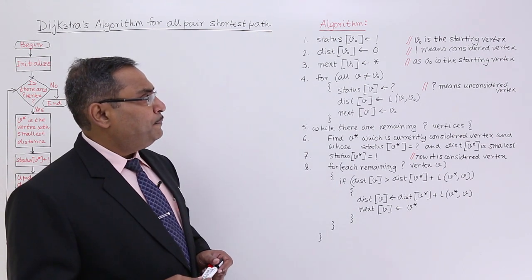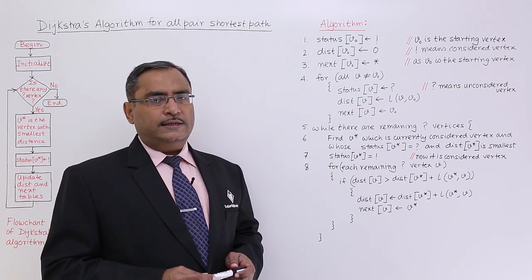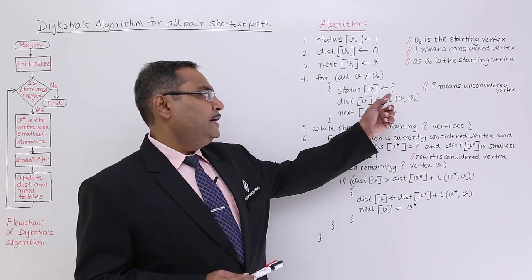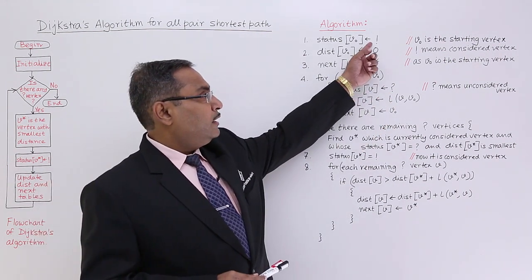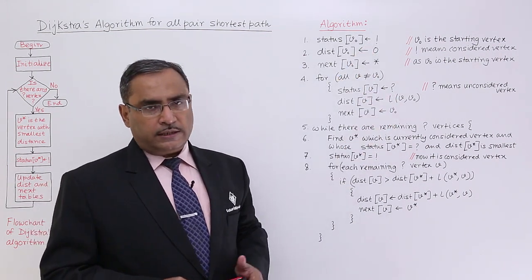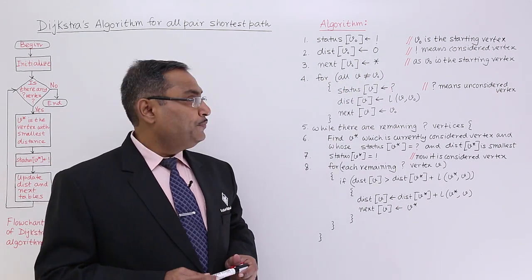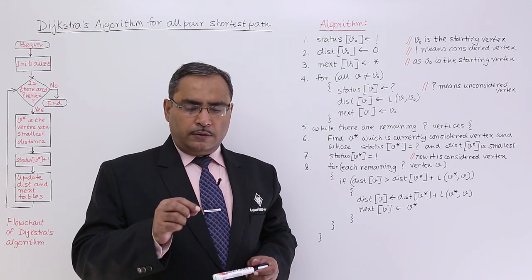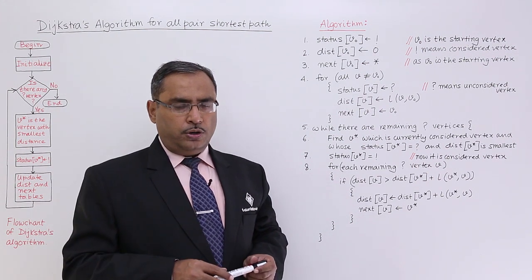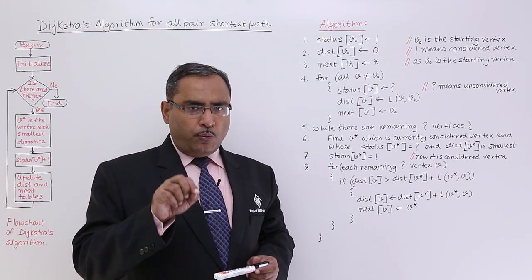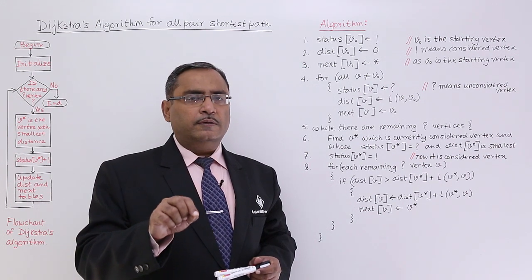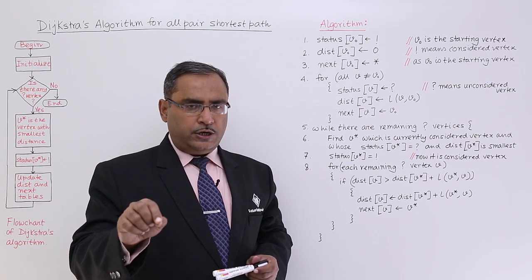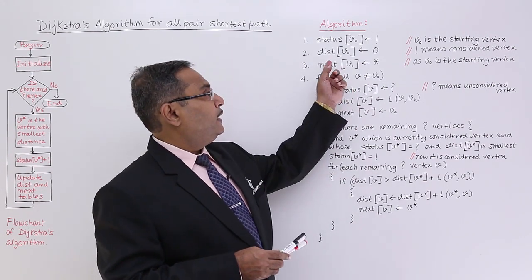Status array can have two values or two symbols. One is exclamation indicating considered vertex. Another will be question mark which is indicating unconsidered vertex. And this dist array will be containing the distance from the source node to the current node. From the source to the current, source means from where I'm measuring the distance from the node where I have started measuring the distance and the current node, the distance between them will be written in this particular dist.